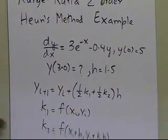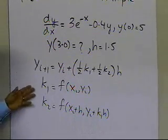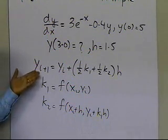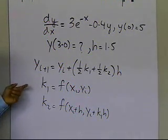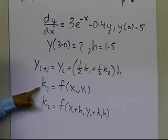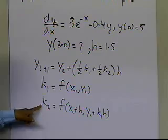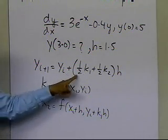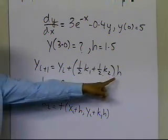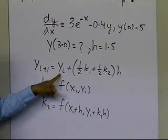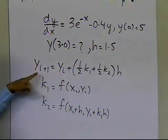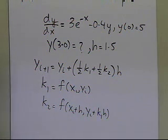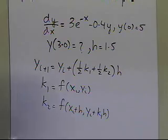The Heun's method application basically involves choosing a value of i — starting with i equal to 0 — calculating k1, calculating k2, plugging those into the formula, taking half of each, multiplying by the step size, and using the known previous value of y to get the new value of y. I'll show you the two steps.